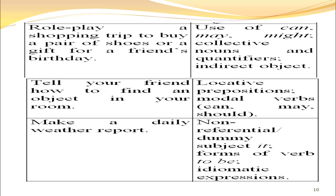If you ask students to tell about their friend or how to find an object in their room, then you are going to talk about locative prepositions and modal verbs — for example, 'can', 'may', 'should', etc. Similarly, if you ask them to make a daily weather report, then you will be talking about non-referential or dummy subjects again, forms of the verb 'to be', and idiomatic expressions, because in weather there are certain expressions which are idiomatic.